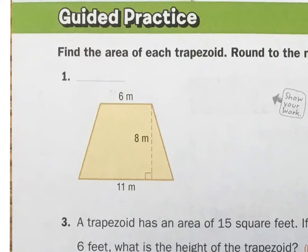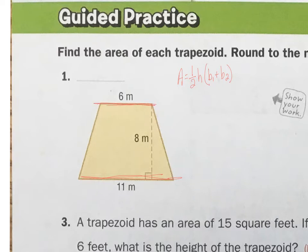This is the guided practice for 9.3, and we're doing areas of a trapezoid. A trapezoid has a nice formula: area equals one-half times your height, then parenthesis, base one plus base two. I have my two bases here — this base and this base. They're different from a parallelogram; if it was a parallelogram, they'd be the exact same, like either 6 and 6 or 11 and 11, but they're different, and that's why they're a trapezoid.